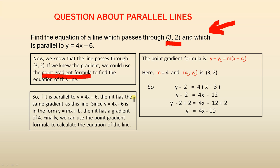So, if it is parallel to y = 4x - 6, then it has the same gradient as this line. Since y = 4x - 6 is in the form y = mx + b, then it has a gradient of 4. See? Because there's the m. There's the m, which represents the gradient. So the gradient's 4.